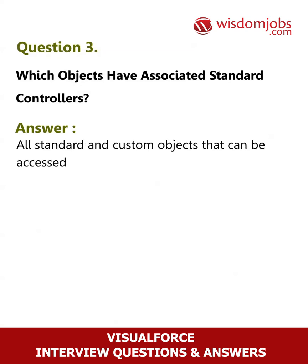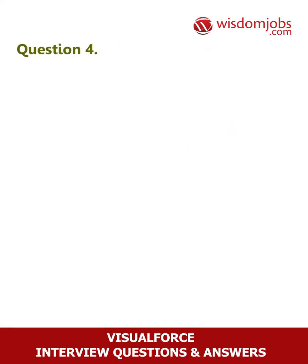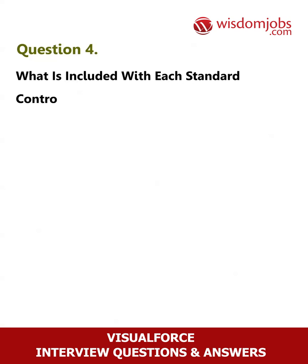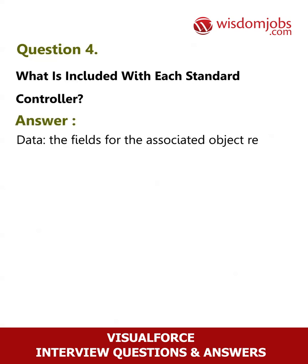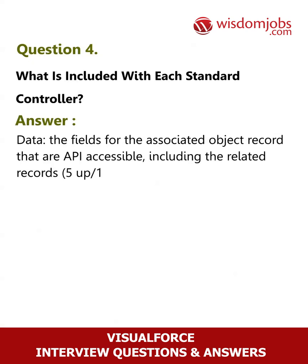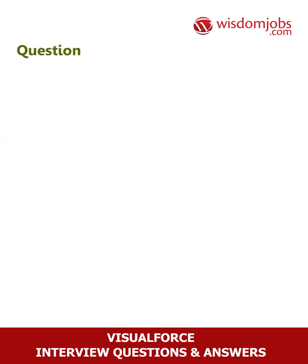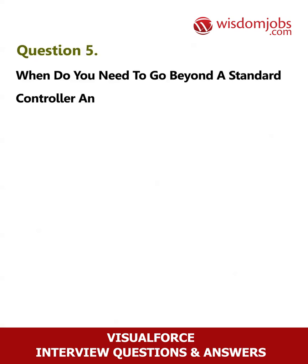Question 4: What is included with each standard controller? Answer: Data — the fields for the associated object record that are API accessible, including related records. Also included are actions: save, delete, view, edit, and cancel.